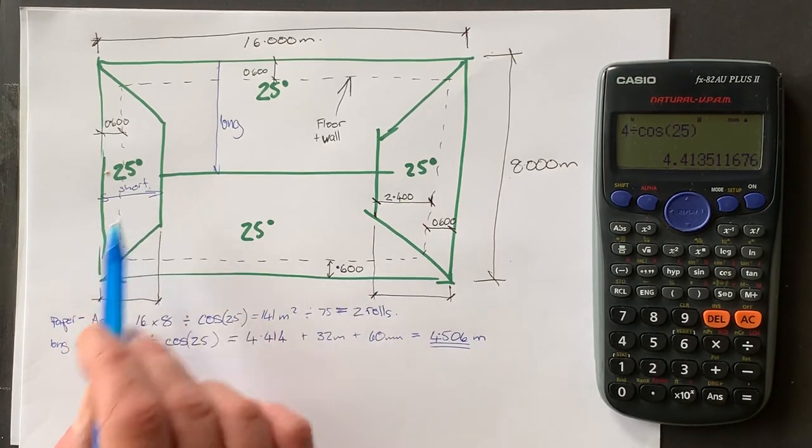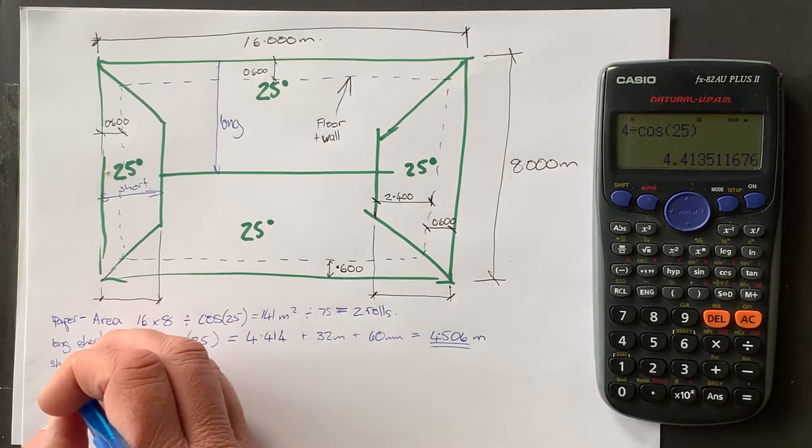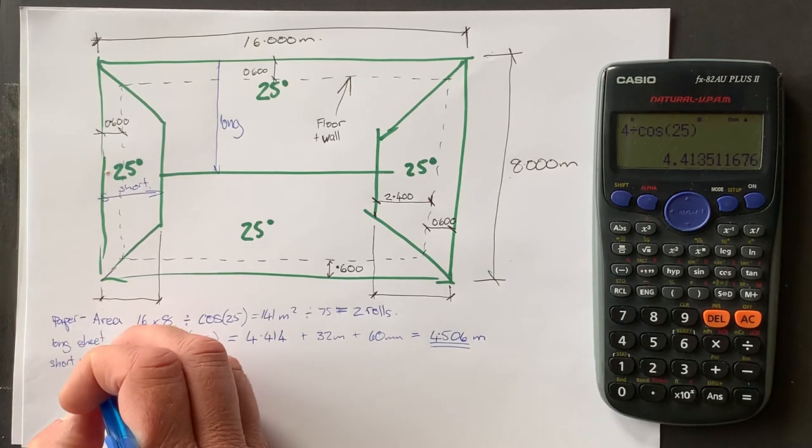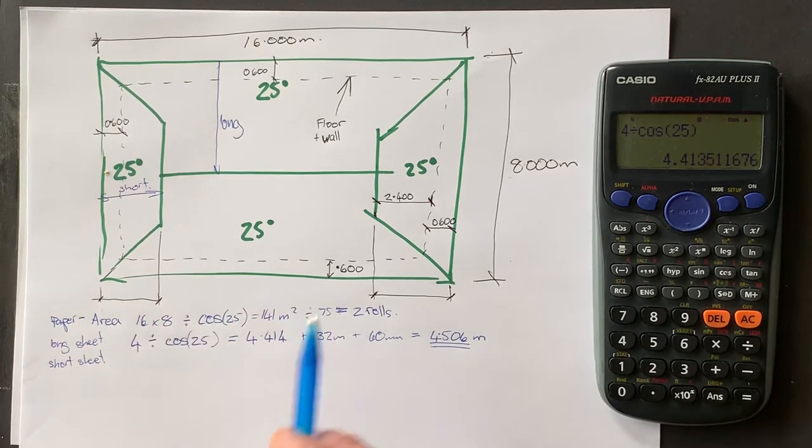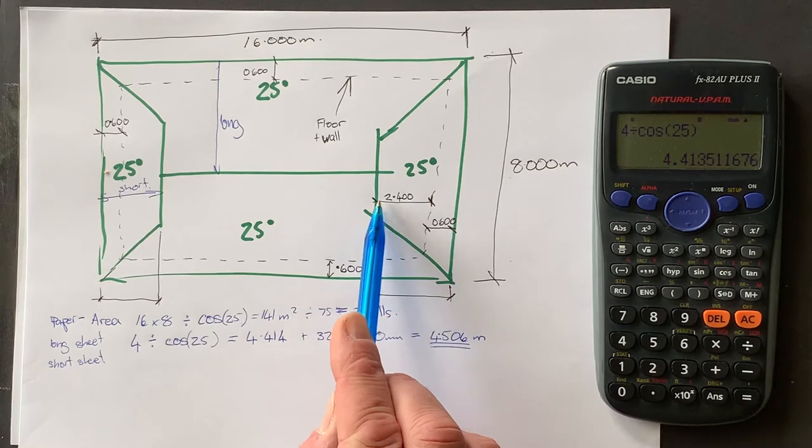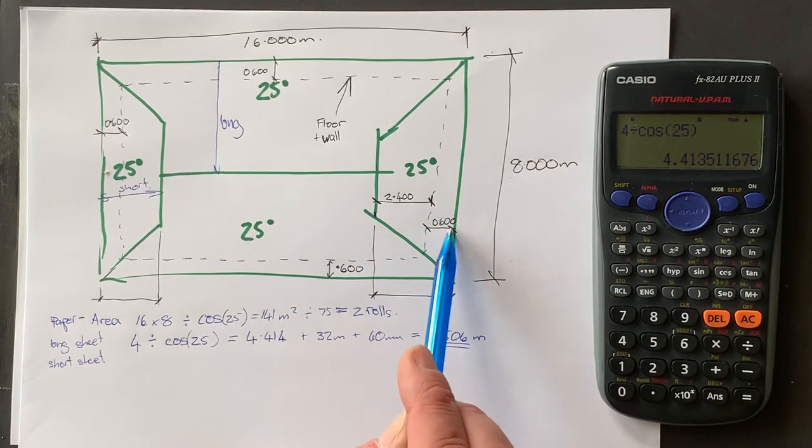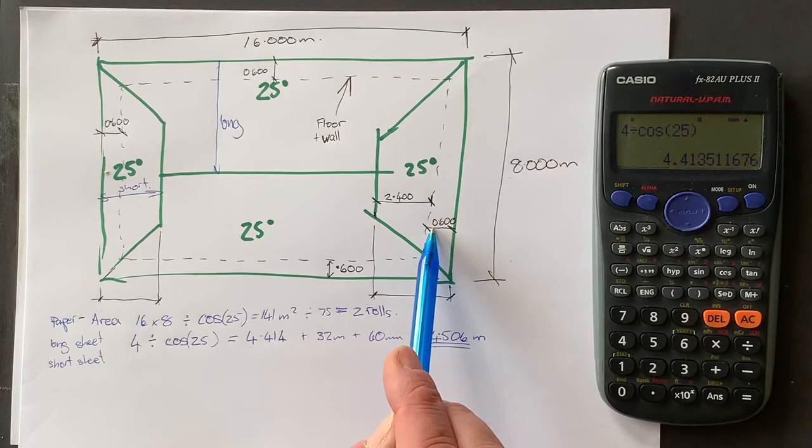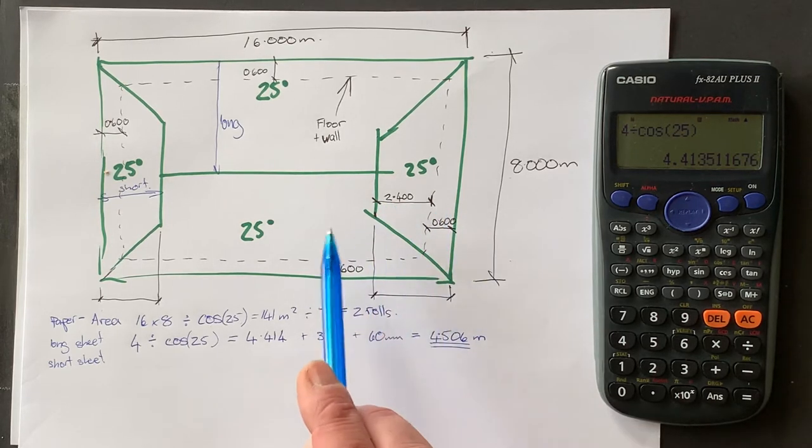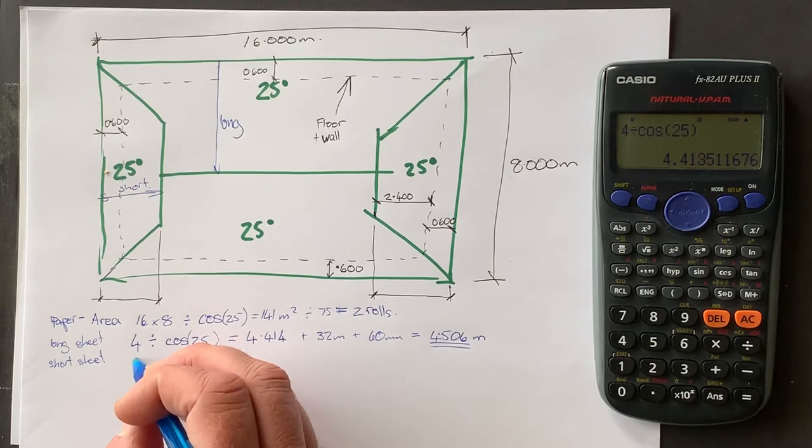Repeat that same process for over here. So short sheet. So we know from here to here was 2.4. You got to take that off the truss plan. And then you've got another 600 millimeters of overhang. So add those two together, three meters.